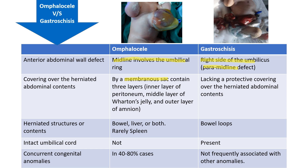The inner layer is peritoneum, the middle layer is Wharton's jelly, and the outer layer is amnion. While gastroschisis is lacking any protective covering over the herniated abdominal contents. The herniated structures in omphalocele can include bowel loops and liver, or sometimes both, and rarely the spleen can also be herniated. While in gastroschisis, only bowel loops will be herniated.